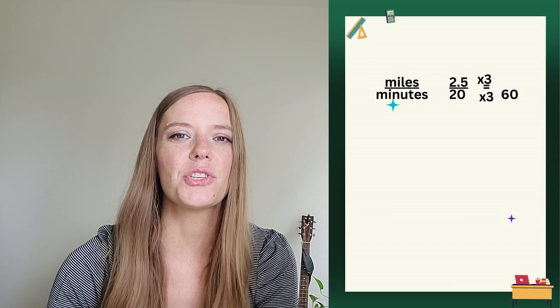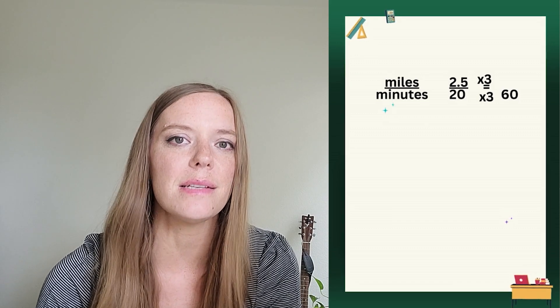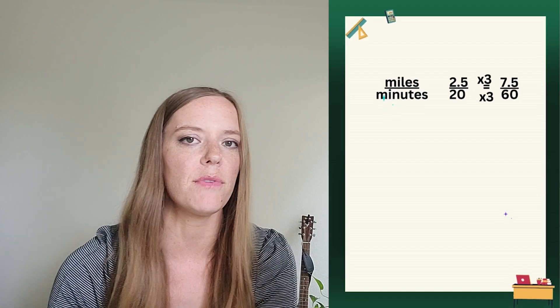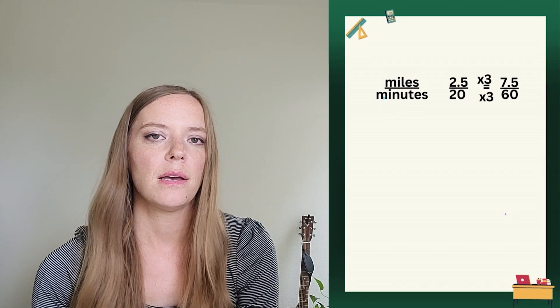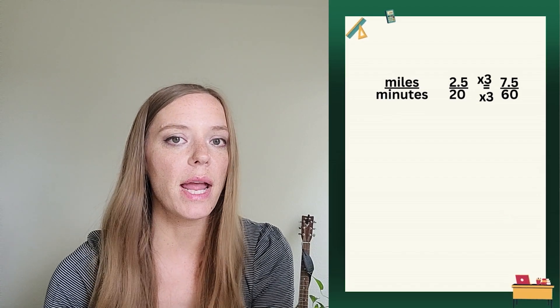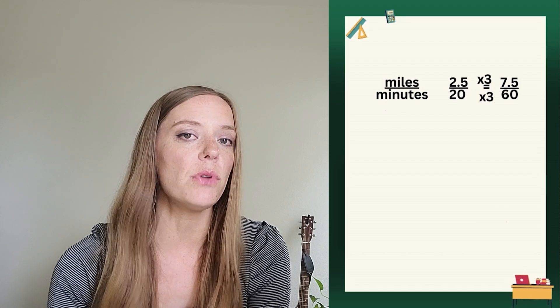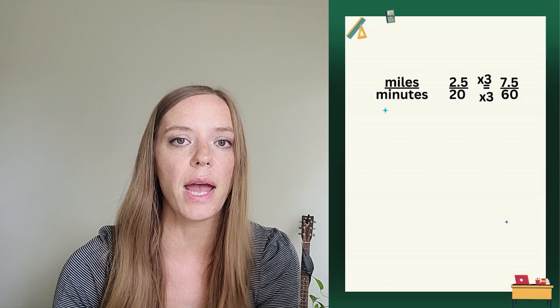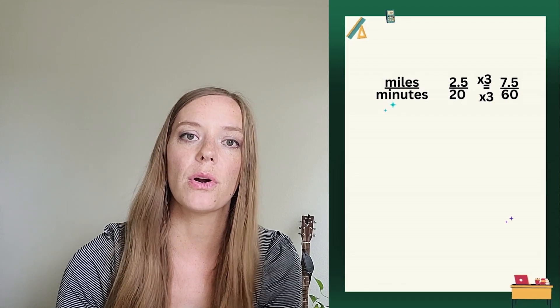All right, you got it. 2.5 times three is 7.5 or seven and five tenths. Or I could think of it as seven and a half. So my unit rate was seven and a half miles per hour.